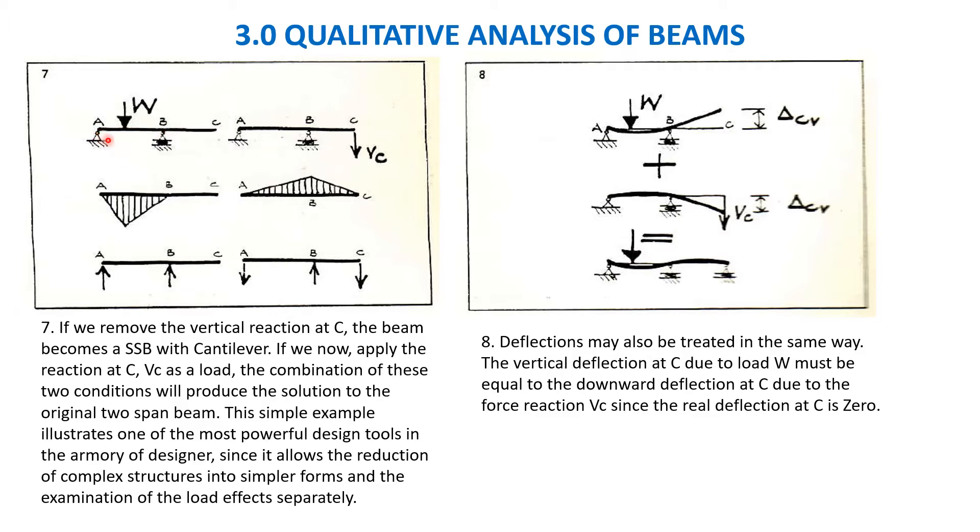Here only it is bending. There is no bending for this member BC, it is just straight, so there is no effect of downward force for this simply supported. In case of the same beam, if I apply the load here, here support, here support, and here the load is applied externally, what will happen?